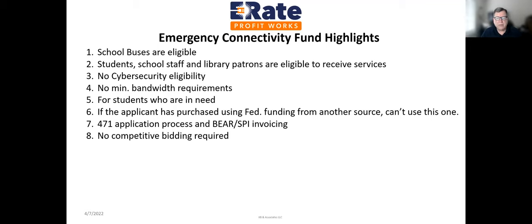The Form 471 application process remains basically the same, and it's BEAR or SPI invoicing — you choose when you submit your application. Work with your service provider to determine what that's going to look like. If you can afford to purchase out of pocket and wait for the funding commitment decision letter, go BEAR — that will get you things earlier in the process. If you have to wait for the funding commitment decision letter before ordering, that's SPI invoicing. No competitive bidding requirements, but follow good-value practices.